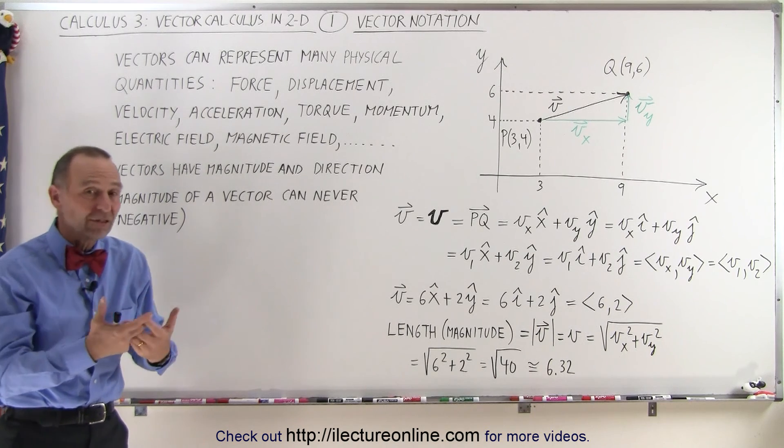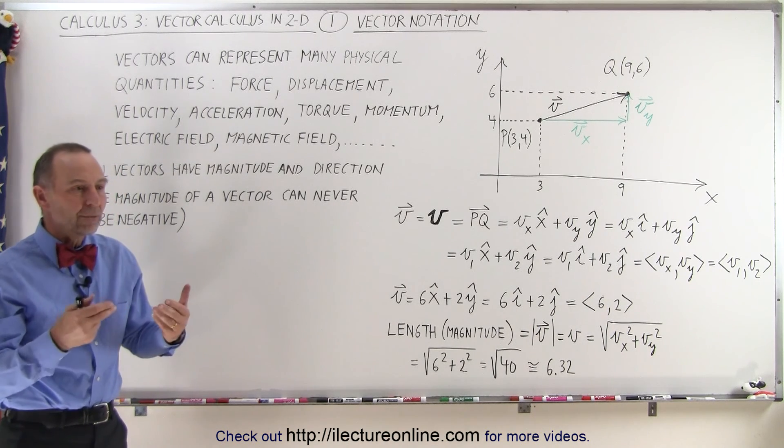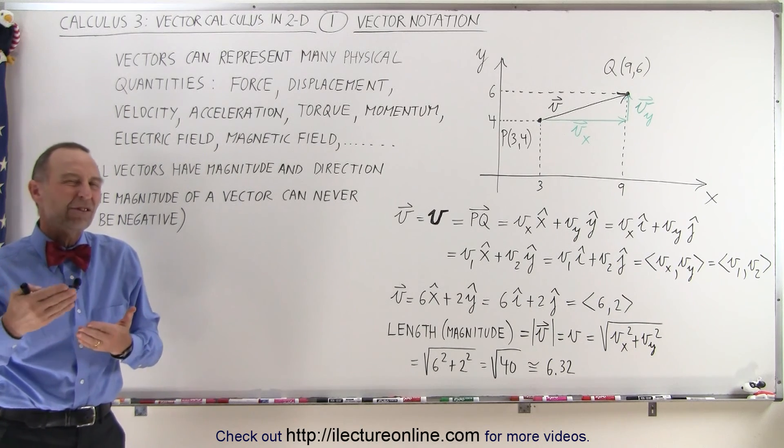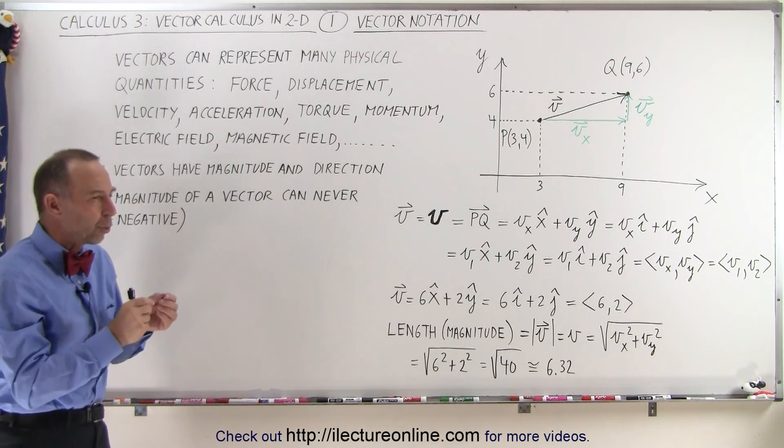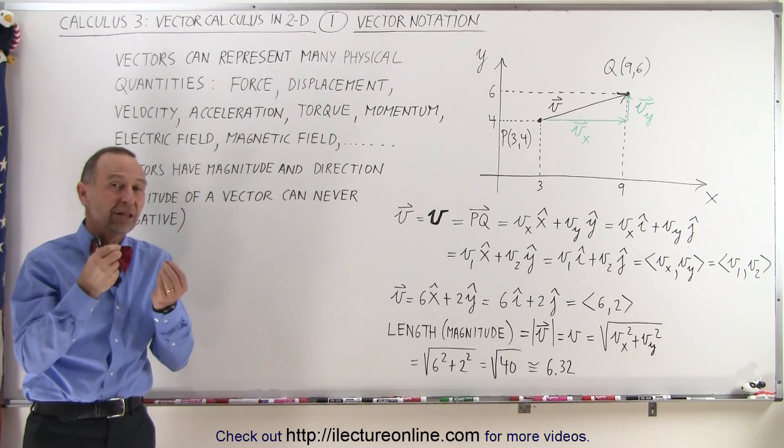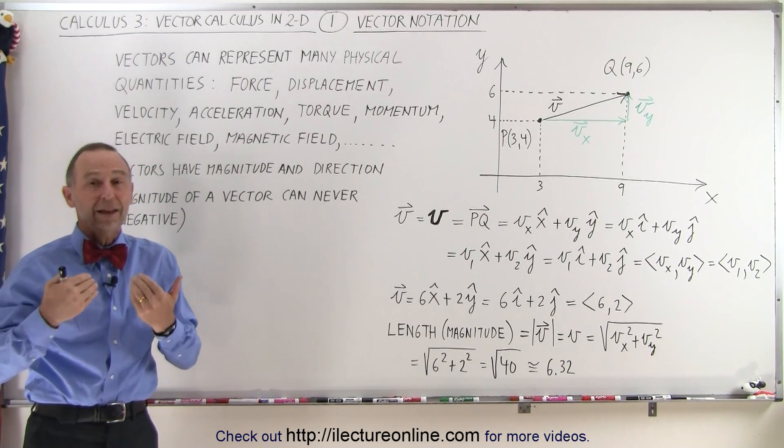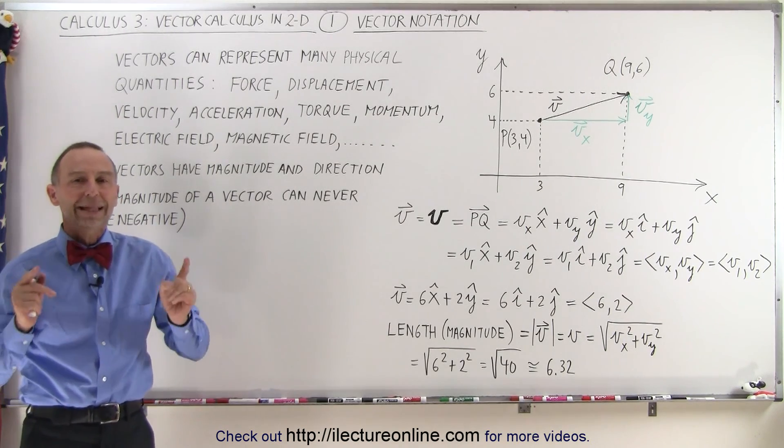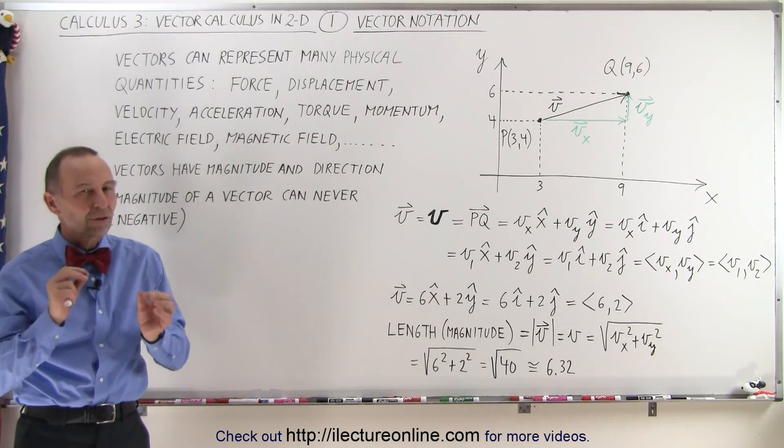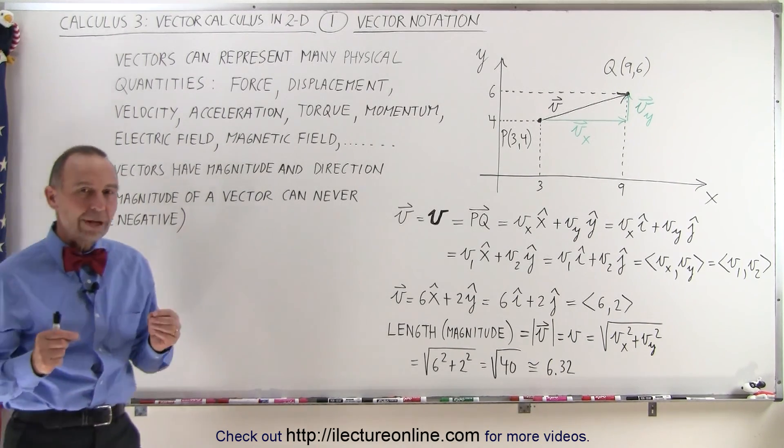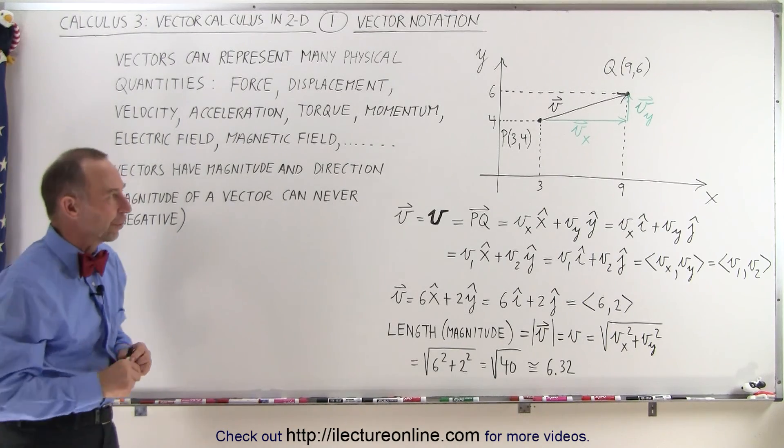When you see a negative acceleration, for example, that doesn't mean there is a negative acceleration, it just means the acceleration is in the negative direction. When it comes to the physical quantity of acceleration, sometimes you can think of slowing down as being a negative acceleration. But the magnitude of that slowing down can only be positive. Let's concentrate on the notation of a vector.